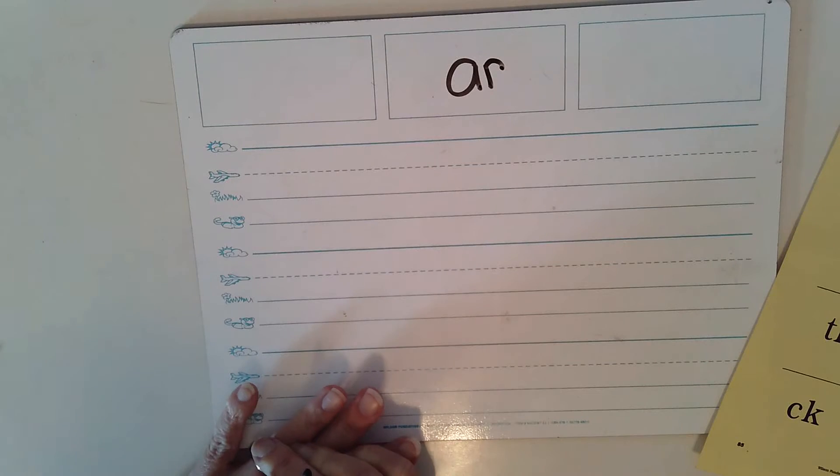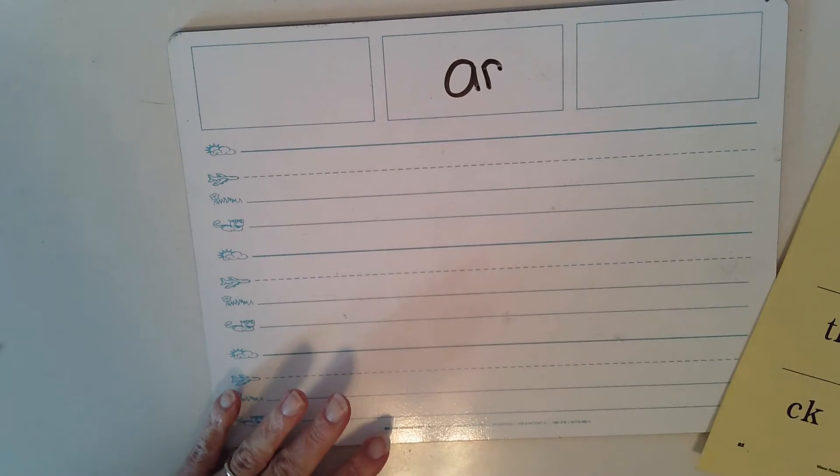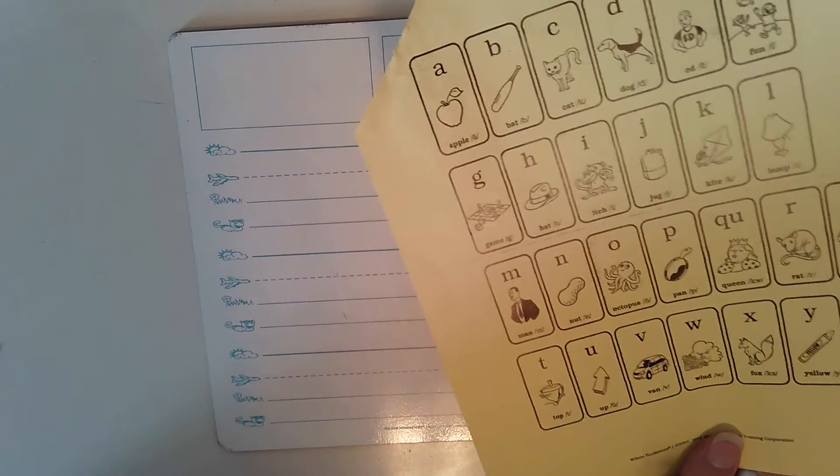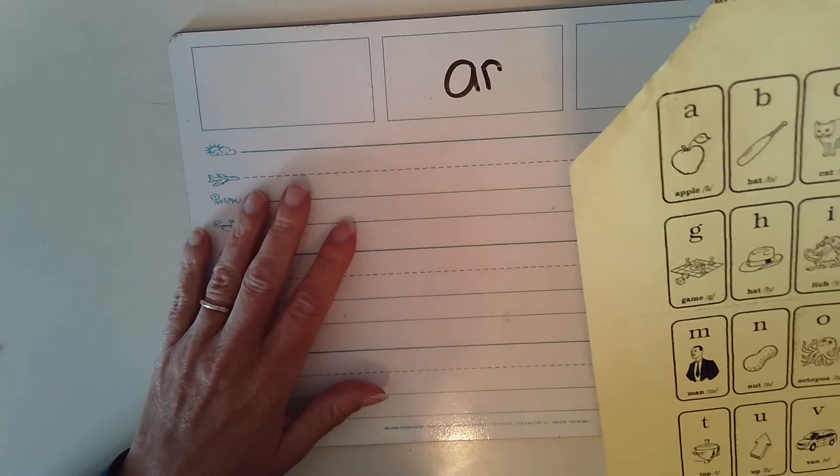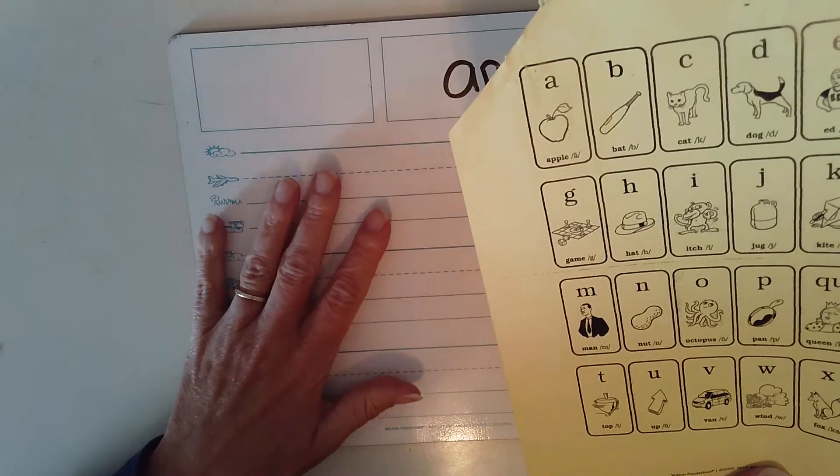So we are going to brainstorm some AR words. I'm going to say a word and I want you to use your chart to think about how to spell it by yourself and then I will write it. I'm going to give you a couple seconds to try to write it by yourself and then you can check with my writing.